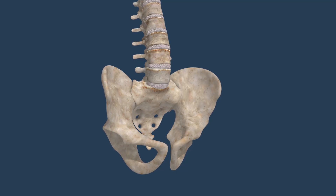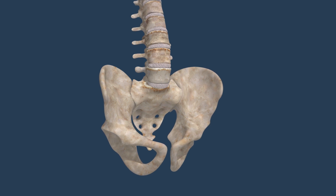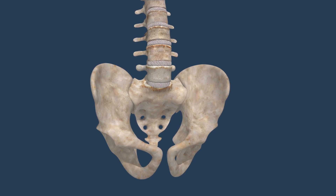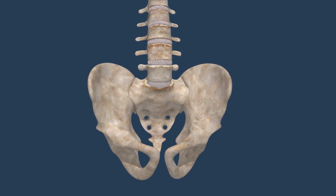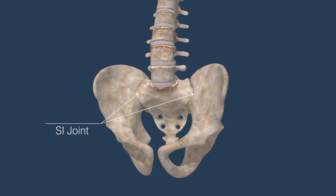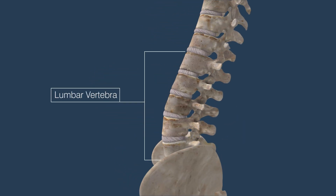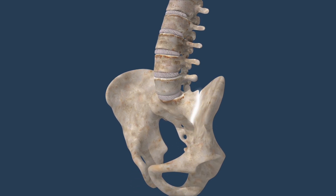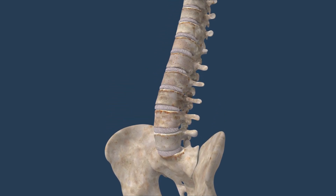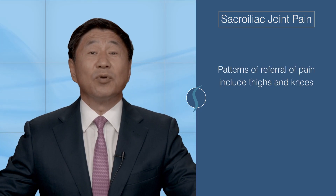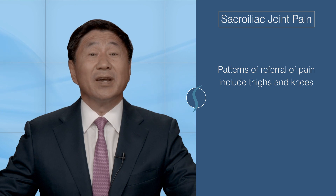SI joint problems can be difficult to diagnose because of the proximity of the SI joint to the spine. With the prevalence of back and spinal injuries, it's important to distinguish SI joint pain originating from the SI joint as opposed to the lumbar vertebrae. For example, degenerative disc disease in the lumbar vertebrae may be interpreted as the SI joint when the source is actually higher in the lumbar spine. The key patterns of referral of pain for patients with SI joint problems includes the thigh and the knee.